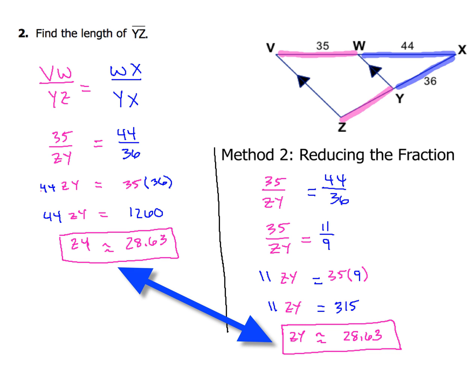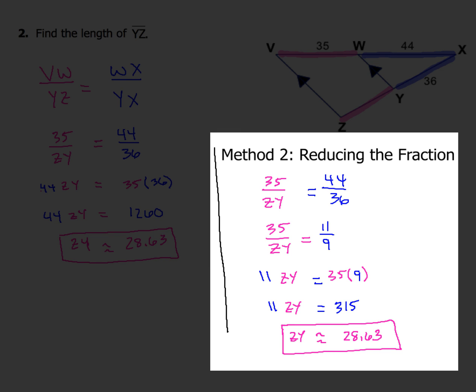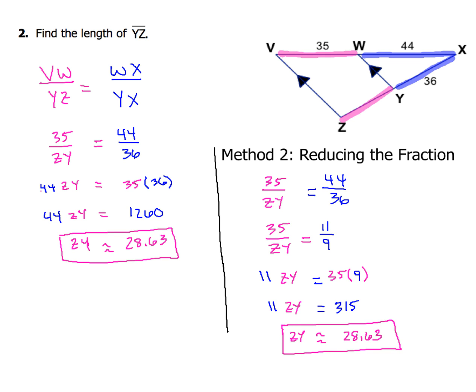So how did you do with that? Did you end up with ZY equals 28.63? That's what you should have ended up with. Over on the right-hand side, I've got a second option that you could have done, a second method where you could have reduced the fraction up front, and the fraction that we're talking about is this 44 over 36. So if you were to reduce that to 11 over 9, because 4 goes into both of those terms, that's your greatest common factor. If you were to reduce that to 11 over 9, you can see that algebraically, you would still end up with the same answer of about 28.63.